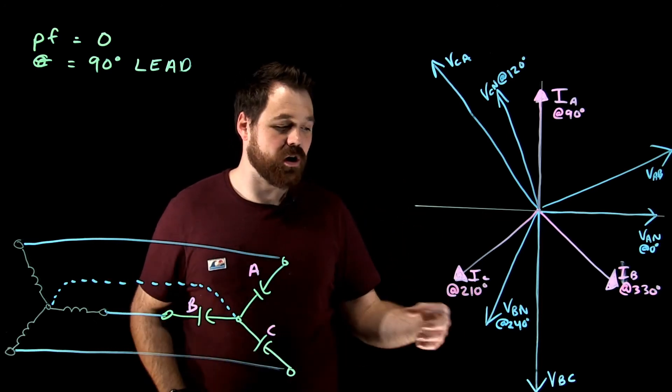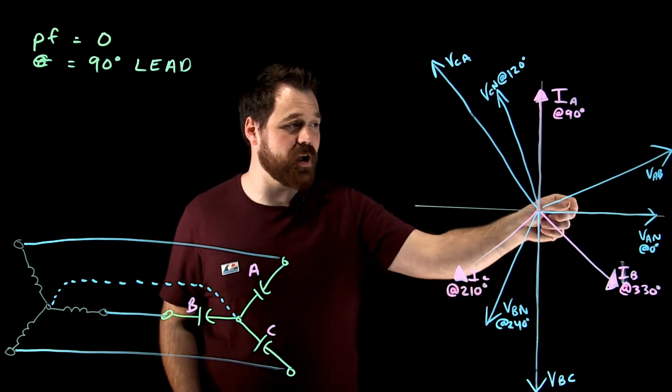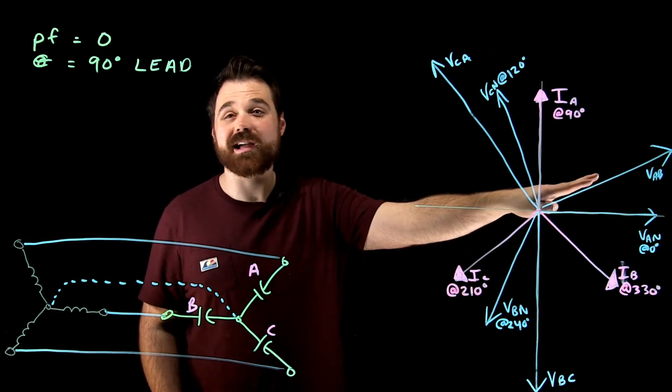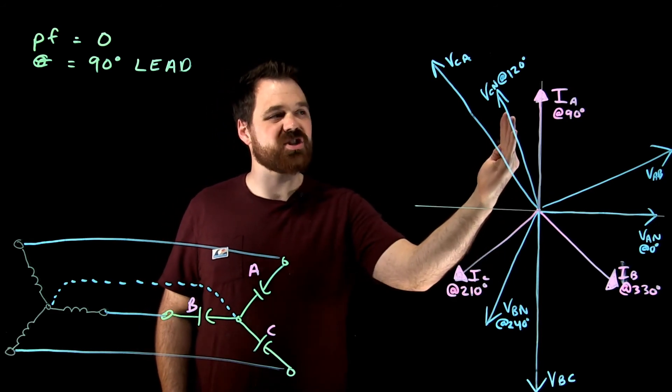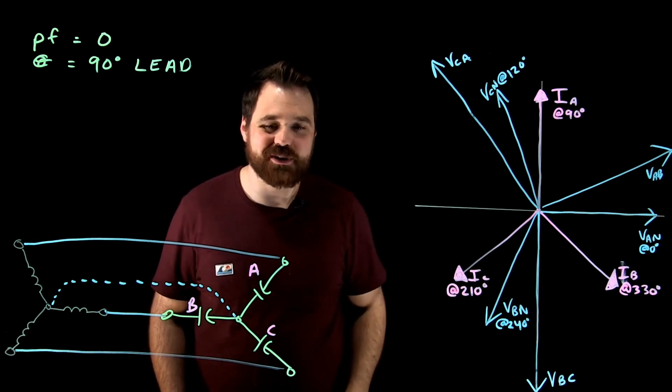And then of course, our line voltages. We know our line voltage leads our phase voltage by 30 degrees. So we can see VAB leading VAN by 30, CA leads CN by 30, and BC leads BN by 30 degrees.